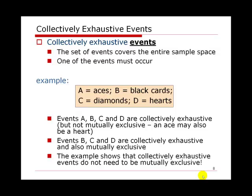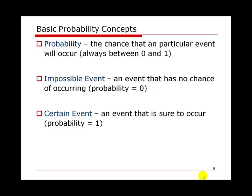After defining events, the next step is to define probability. Probability is the chance that an event will occur. This number is defined between 0 and 1 — a probability cannot be negative or greater than 1. When the probability equals 0, the event will never occur and is called an impossible event. When an event is sure to occur, we assign probability 1 and call it a certain event.